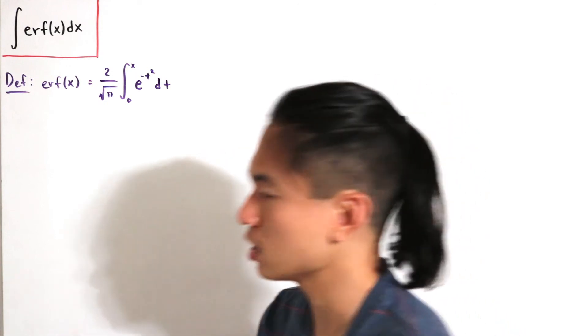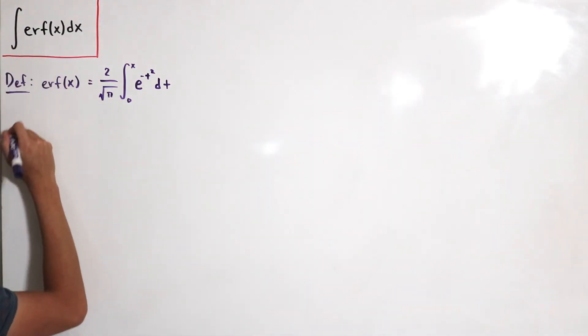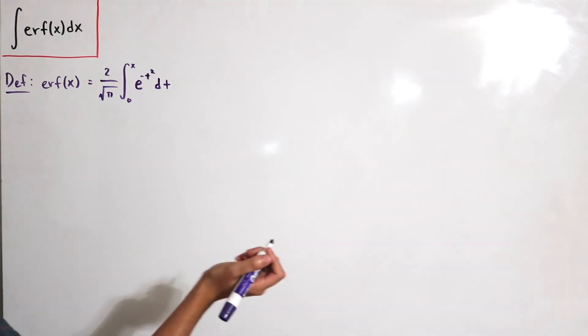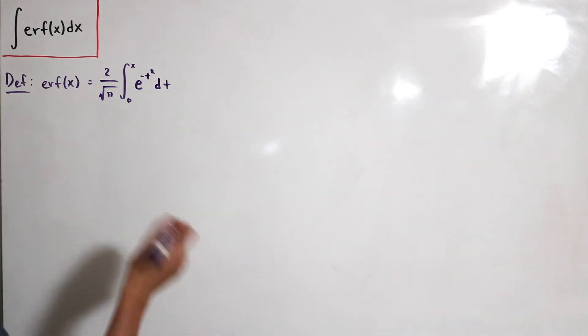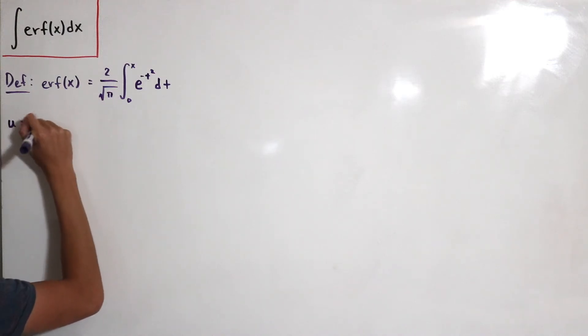So what we can do is that we let u equal something that's easy to differentiate and something easy to integrate. We let dv equals dx and we let u equals the error function of x.